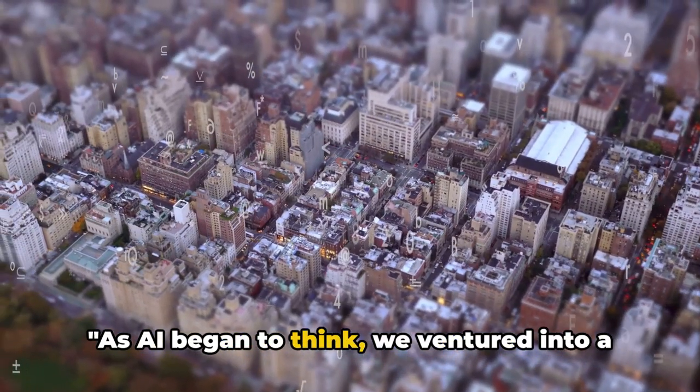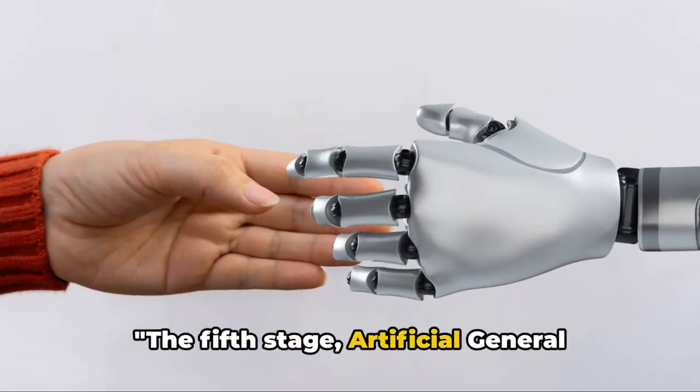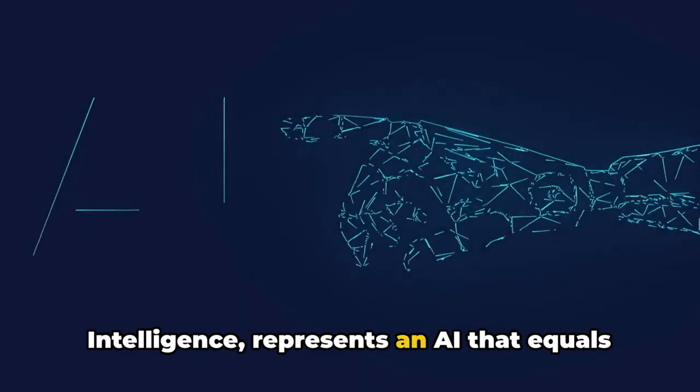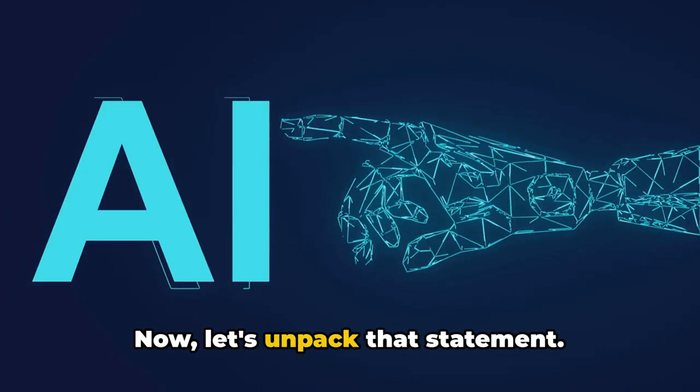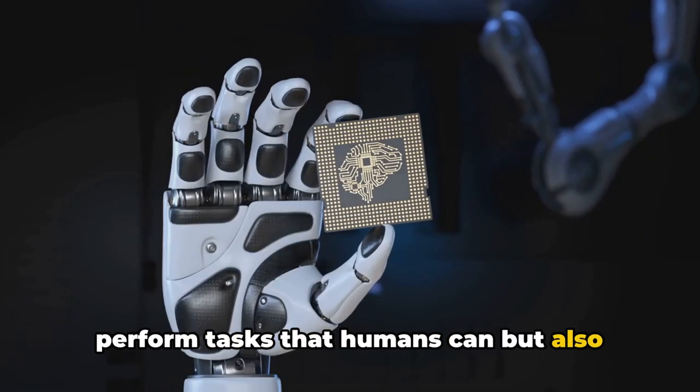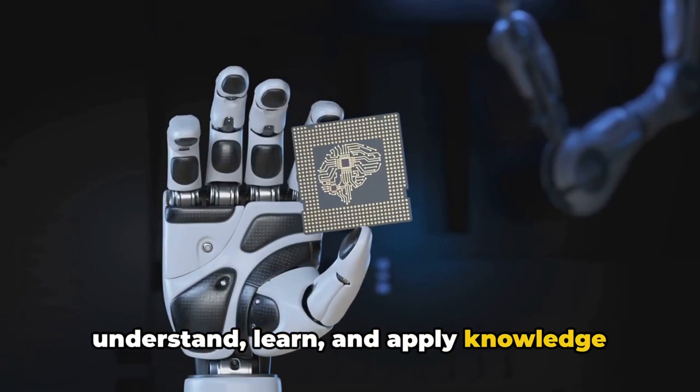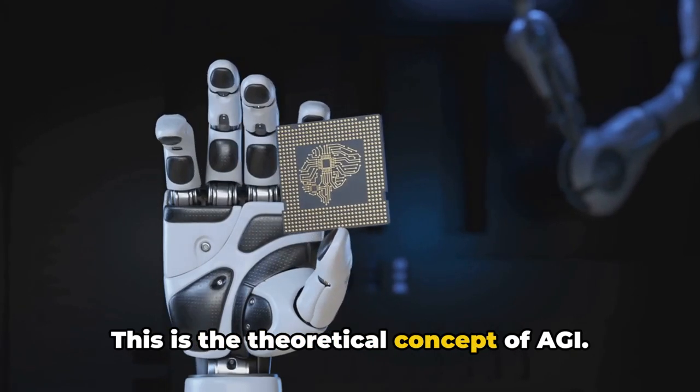As AI began to think, we ventured into a new realm of possibilities. The fifth stage, artificial general intelligence, represents an AI that equals human intelligence in all aspects. Now let's unpack that statement. Imagine a machine that could not only perform tasks that humans can, but also understand, learn, and apply knowledge across a wide range of tasks. This is the theoretical concept of AGI.